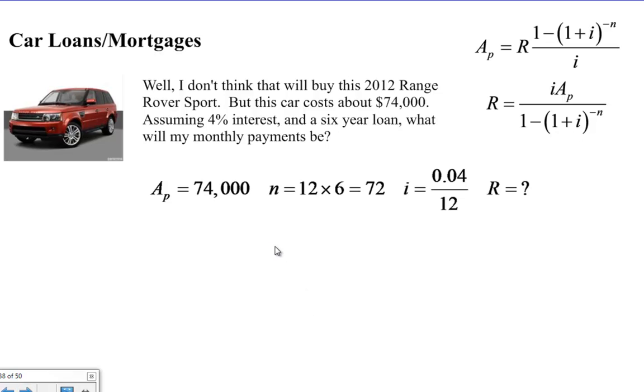What do we know? We know the present value of the loan that we need is $74,000. We know that N is equal to 12 times 6 because we have a six-year loan and monthly payments give us 72 total payments. And we know the interest rate is .04 divided by 12, so we have to figure out what our repeating payments are going to be.